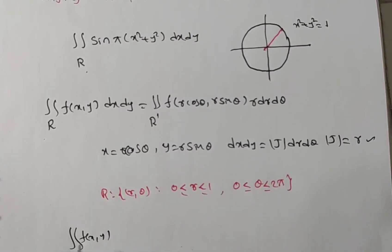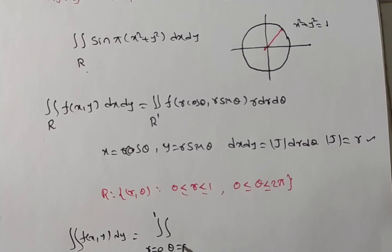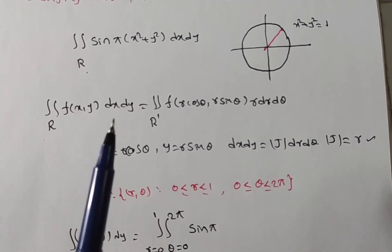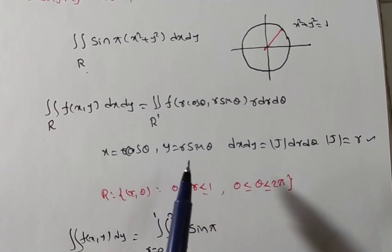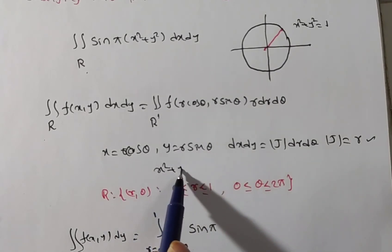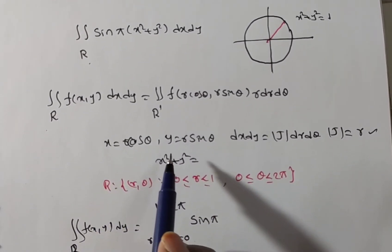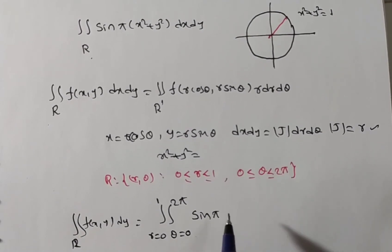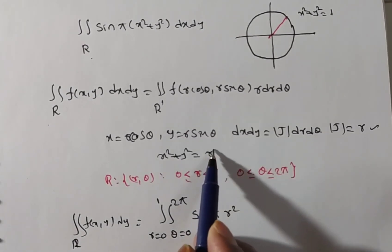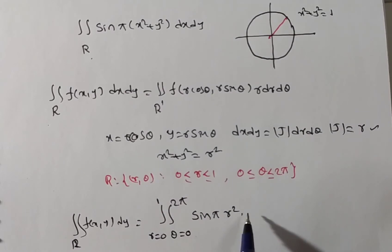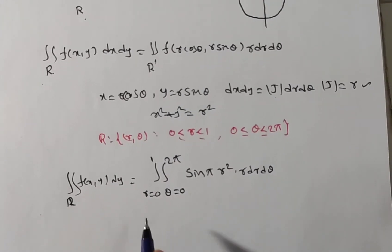The double integral over R of f(x, y) dx dy becomes: integral from r = 0 to 1, integral from θ = 0 to 2π of sin(π(x² + y²)) · r dr dθ. Since x = r cosθ and y = r sinθ, we get x² + y² = r²cos²θ + r²sin²θ = r²(cos²θ + sin²θ) = r². So the integrand becomes sin(πr²) and dx dy = r dr dθ.